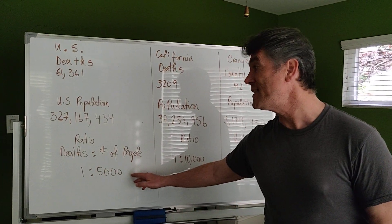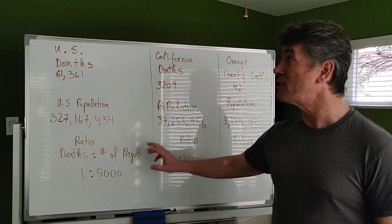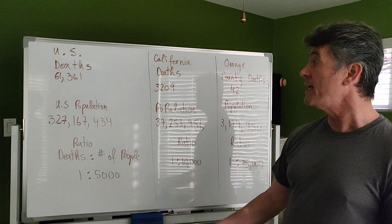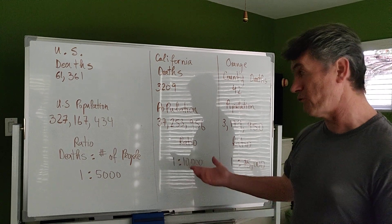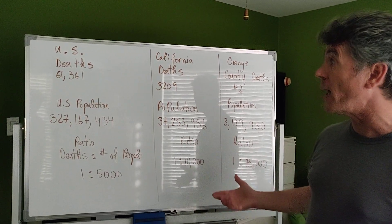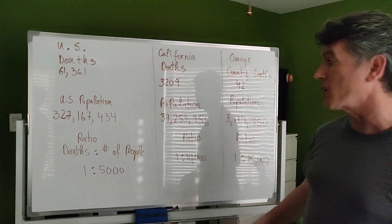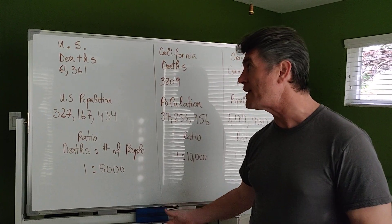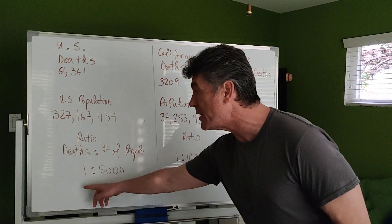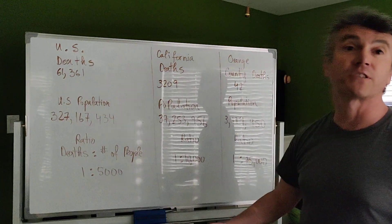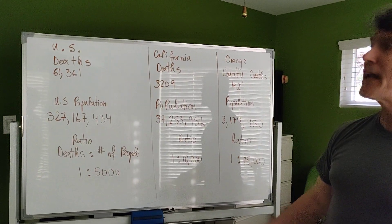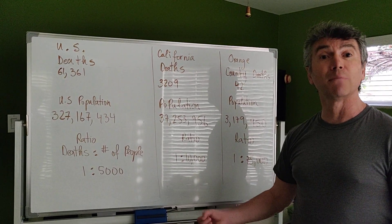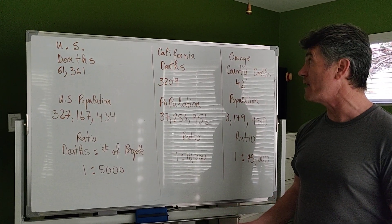This number of deaths to number of people is for the entire U.S., but this ratio would be lower for New York and it would be much higher for North Dakota. What I mean by that is probably if I just looked at New York, it might be one death for every 1,000 people. Since I didn't look, I'm not going to say anything other than numbers can be manipulated and then they can lie.